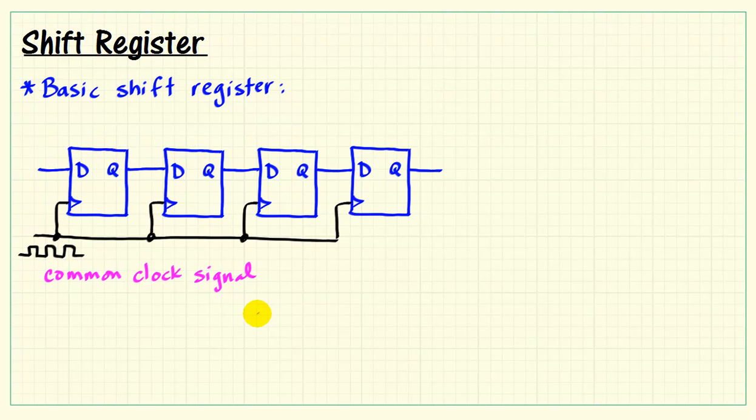And the leftmost flip-flop needs to get fed with some kind of value. We'll come back to that one a little bit. Now imagine that this stored bit pattern looked like this, 1-0-1-1. Now we know that the 1 here appears on the Q output, 0 is on its Q output, and so forth.